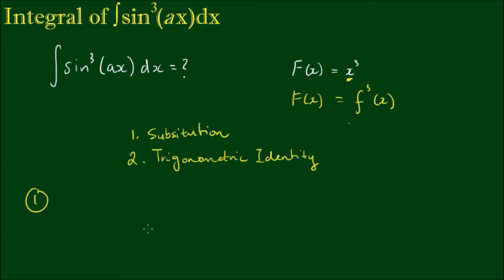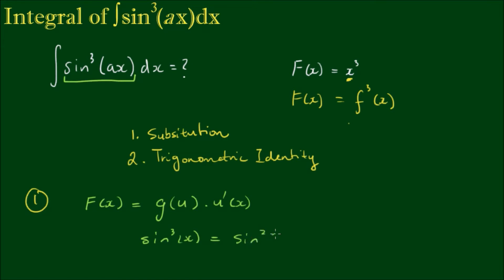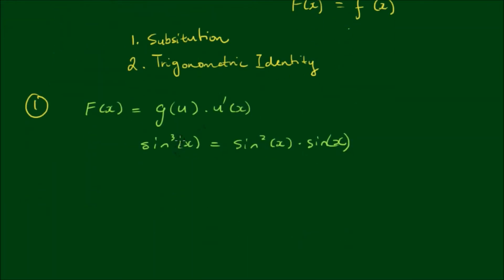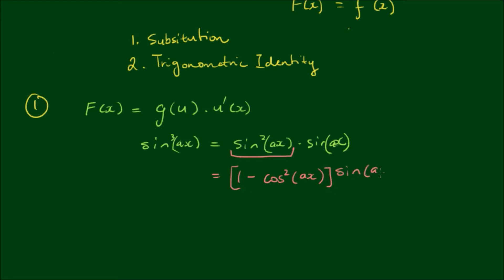With substitution we are trying to use the reverse of the chain rule. What we are trying to do is to get the integrand F into the form F equals g times the derivative of u. We can do that by writing sin³(ax) equals sin²(ax) times sin(ax). By the Pythagorean identity we can rewrite sin²(ax) as 1 minus cos²(ax), and leave the sin(ax) at the back remaining as it is.